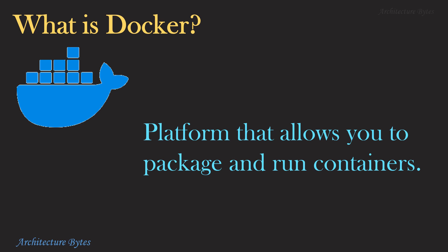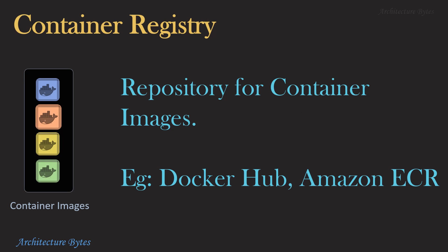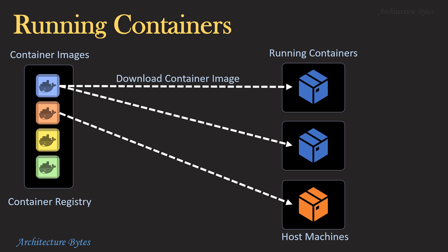What is Docker? Docker is a platform that allows you to package and run containers. A Docker image is a read-only template that includes information about the containerized application. A container registry is a repository for container images. Docker Hub and Amazon ECR are examples of container registries. Containers are downloaded from container registries and run on host machines using a container runtime engine like Docker.